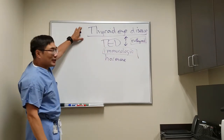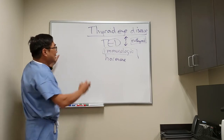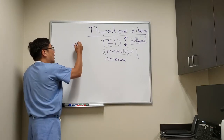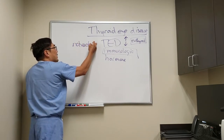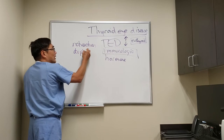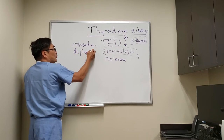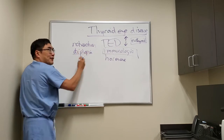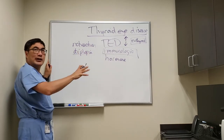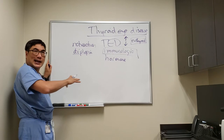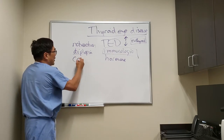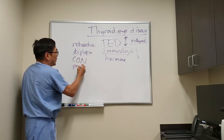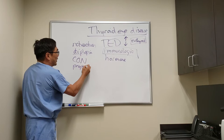So they have all the typical findings of thyroid eye disease: the lid retraction and the lid lag, the diplopia from the ophthalmoplegia — and that's usually the inferior, medial, superior, and lateral rectus last — and they might have a compressive optic neuropathy from compression of the orbital apex and proptosis.